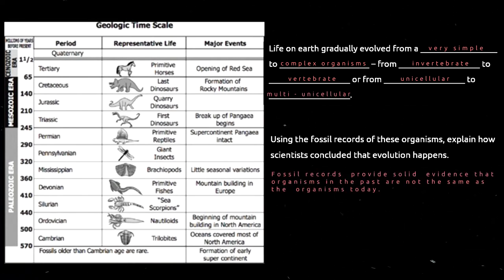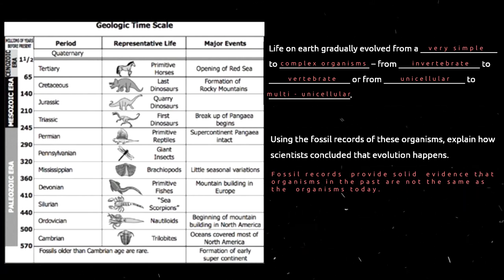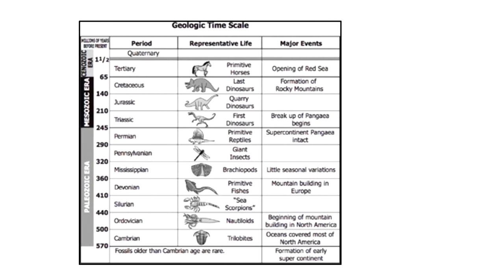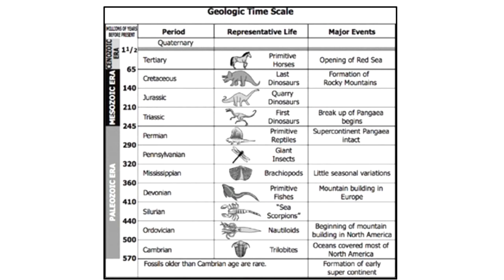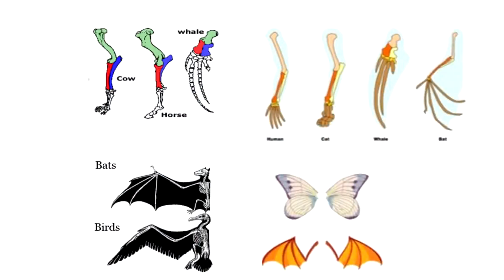Fossil records provide solid evidence that organisms in the past are not the same as the organisms today. Based on fossil records, paleontologists were able to conclude that there is really evolution since, through time, organisms have developed from very simple to complex organisms. The geologic time scale is the calendar for major events in Earth history. It also shows the appearance of various kinds of organisms in a particular period of time on Earth. By studying and examining the physical rock layers and dating of fossilized remains and imprints, scientists were able to develop the geologic time scale.